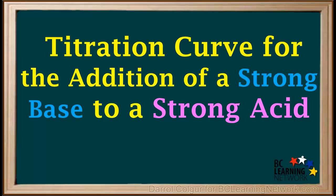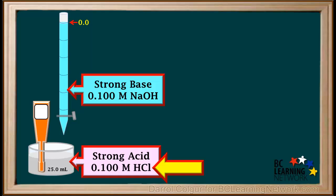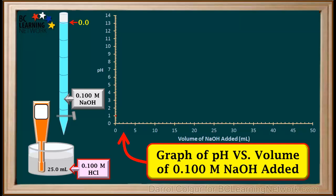Here we'll consider the addition of a strong base to a solution which is initially a strong acid. The base is in the burette and the acid is in the beaker below it. The strong base we'll use is 0.1 molar NaOH, and the strong acid is 0.1 molar HCl. We have added 25 milliliters of 0.1 molar HCl to the beaker. A pH meter will be used to monitor the pH, and we'll draw a graph of pH versus volume of NaOH added.